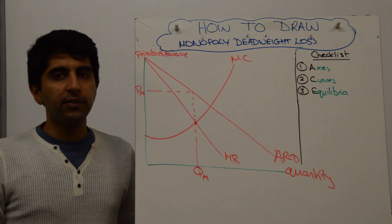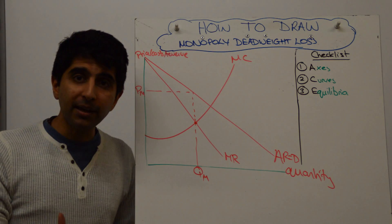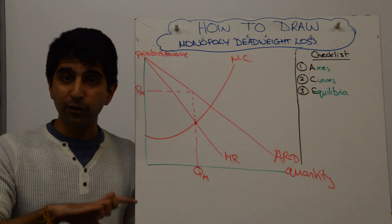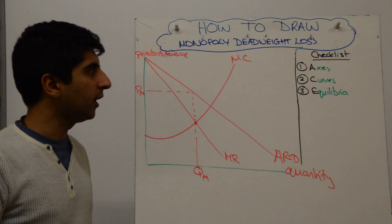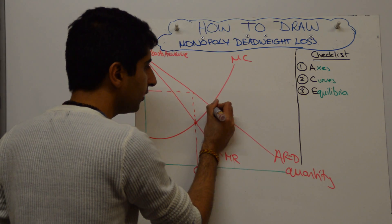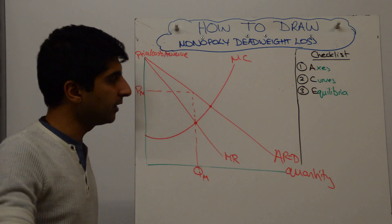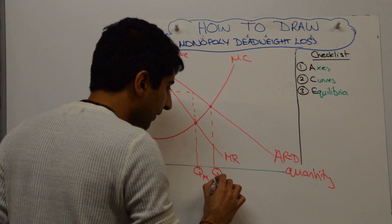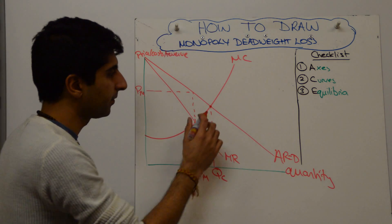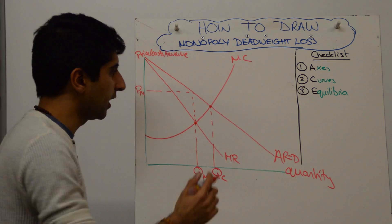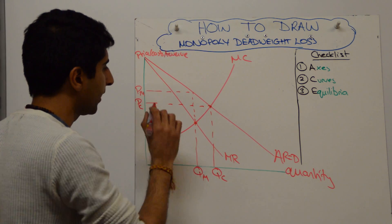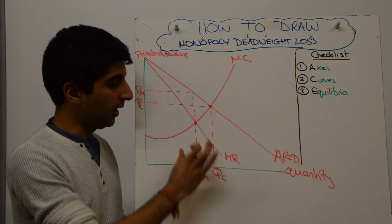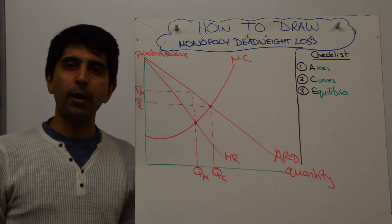We also want to show on this the price and quantity a competitive firm would charge. A competitive firm would be allocatively efficient, therefore would produce where price is equal to marginal cost. Where price equals marginal cost, it occurs there. Remember price is average revenue, so where AR is equal to MC is here. And that gives us quantity and price in a competitive market structure. This gives you the idea that a monopolist charges a much higher price and produces a much lower level of output.